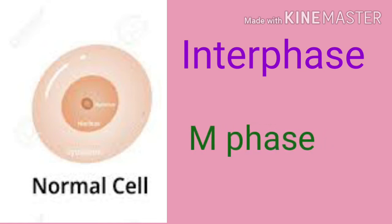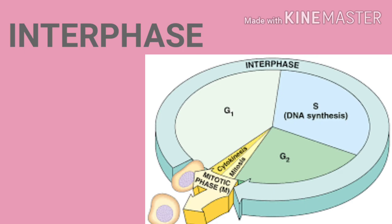In cells with nuclei, the cell cycle is divided into two main stages: one is interphase and the second one is M phase, also called the mitotic phase. The period between two cell divisions is called interphase. Interphase can be divided into three phases: G1, S, and G2 phases.